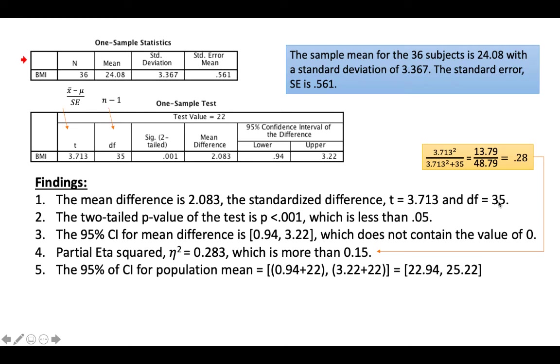And df equals to 35. Two-tail p-value of the test is less than 0.05. 95% confidence interval for mean differences is the lower bound is 0.94, upper bound is 3.22, which does not contain the value of 0. Partial eta squared, if you want to calculate, that's the formula, that's how you calculate it. The 95% confidence interval for population mean is your lower bound plus your hypothesized value, upper bound plus hypothesized value, you're going to get 22.94 and 25.22.